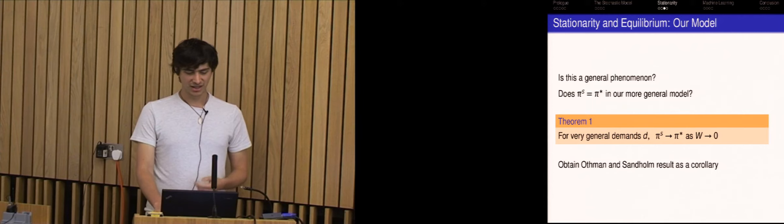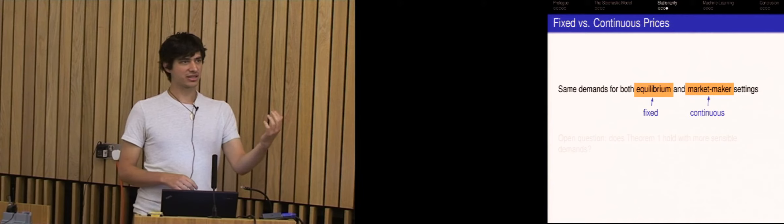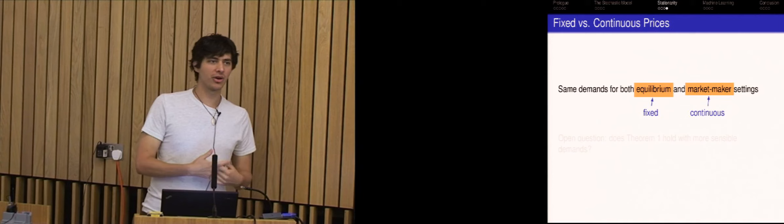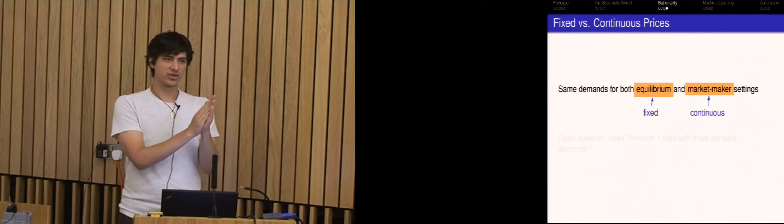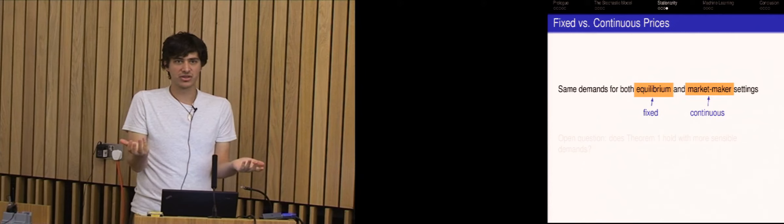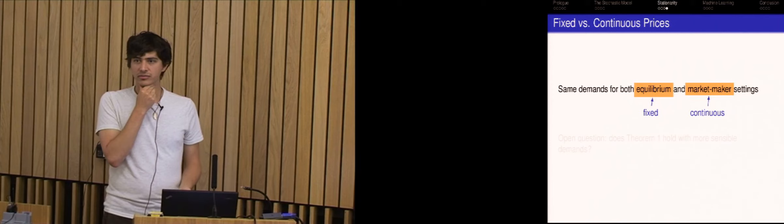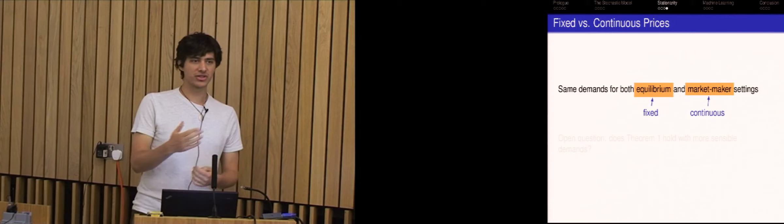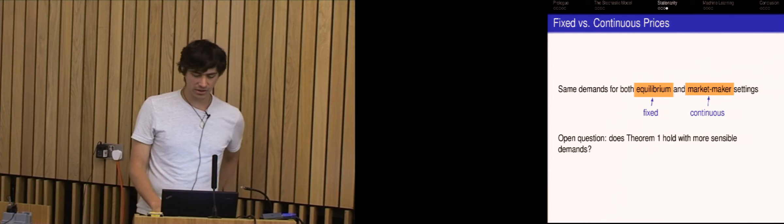Well, it's not quite general because it only, I mean this is particular to prediction markets. So I mean you could definitely ask in a general Fisher or Arrow-Debreu market, that kind of setting, does this still hold? Yeah, I'm not sure. And there's one more caveat, which is we've used the same demands for both settings, but that actually doesn't quite make sense. So in the equilibrium setting you have basically a fixed price. The auctioneer asks a fixed price and says how much do you want for that price? But in the market maker setting, the price is sort of moving under your feet as you buy.